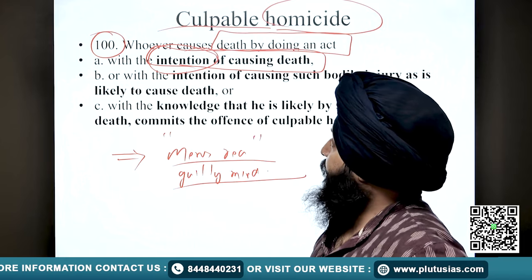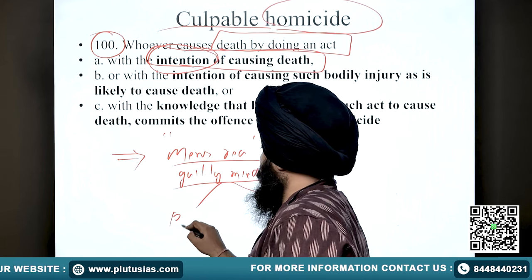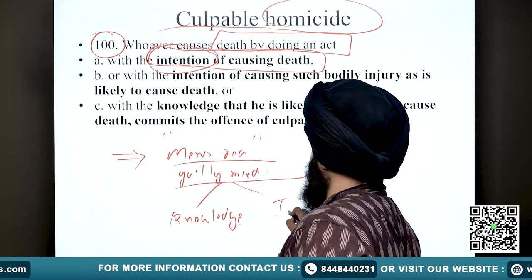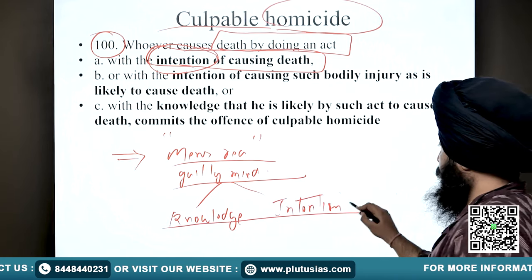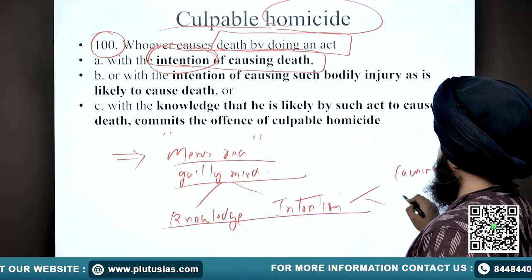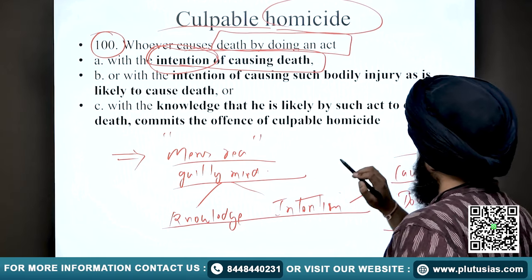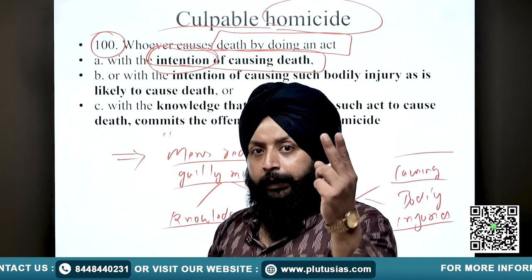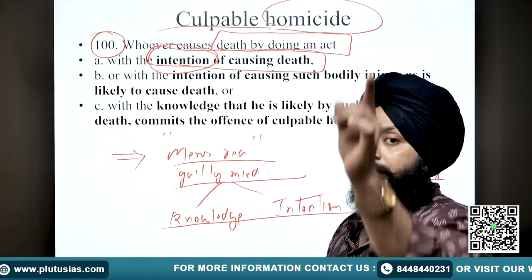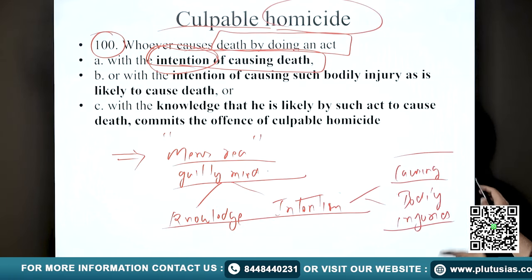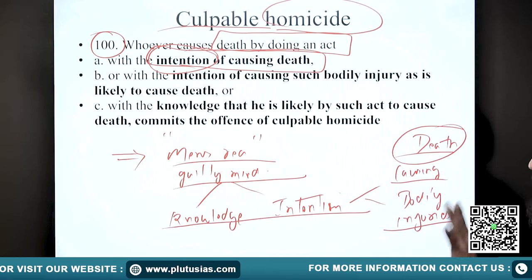In Section 100 and Section 101 of BNS, we will see what are the essentials of that guilty mind. There must be knowledge or intention - either of causing death or causing bodily injuries that have the probability of causing death. If a person has committed an act with an intention of causing either bodily injury or death, it is culpable homicide.